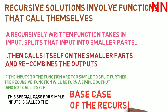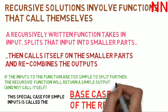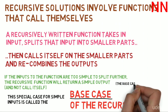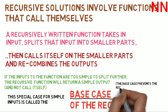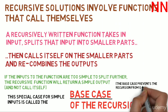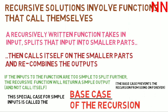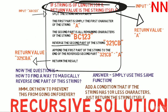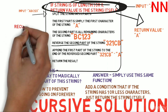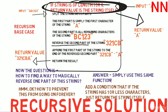If the inputs to the function are too simple to split further, that is when recursion stops — the recursive function will not call itself but instead return a simple output. This special case, when the input is so simple that it can't be broken down further and has a simple return value, is called the base case of the recursion. In the example we just saw, the base case involved returning the string itself, and it is this base case which prevents the recursion from going on indefinitely.